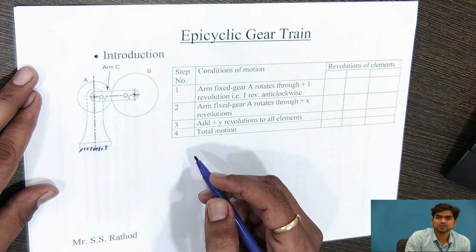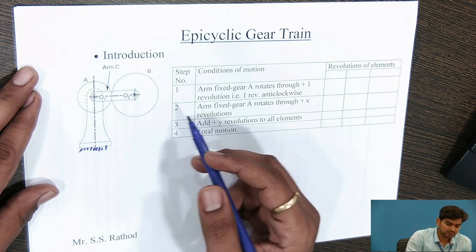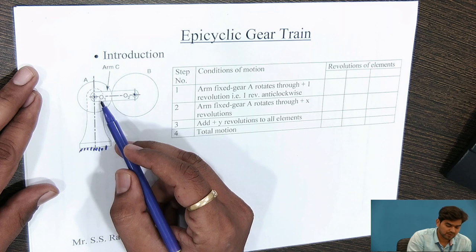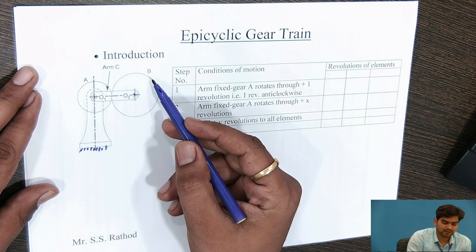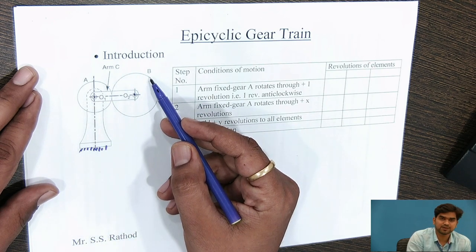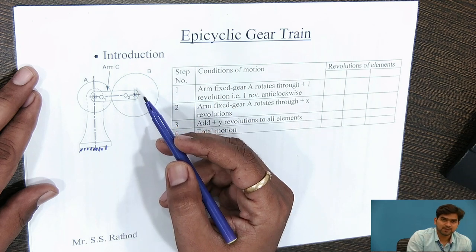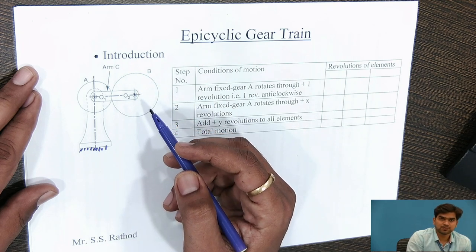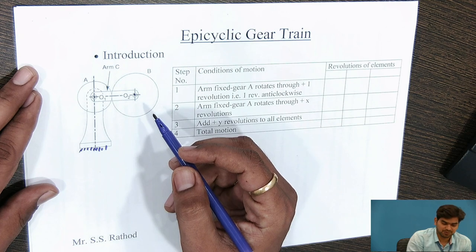In this case, we have to find out the speed ratio — suppose we know the speed of the arm or the speed of gear A, and we have to calculate the speed of B. For calculating this, we should know what the procedures are for finding this speed.